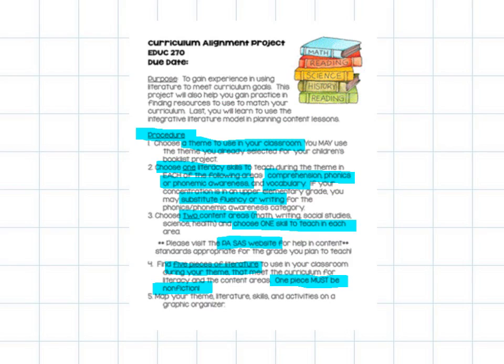And then your fifth step is to take your information. You're taking your five pieces of literature, your three literacy skills and your two content area skills, and you're putting it together on a graphic organizer.